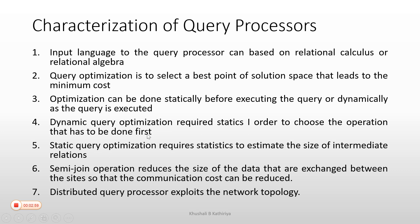Dynamic query optimization requires a statistics order to choose the operation that has to be done first. In dynamic optimization, statistics order is used to choose the best query. Static query optimization requires statistics to estimate the size of intermediate relations.